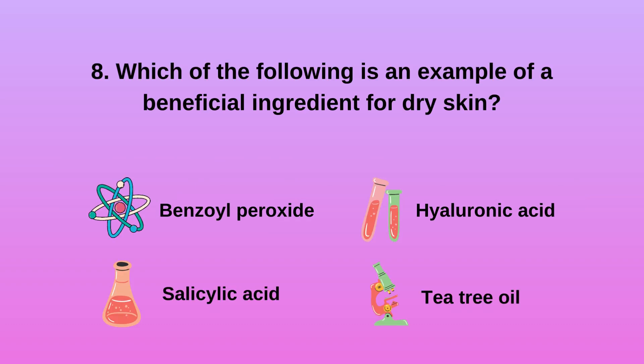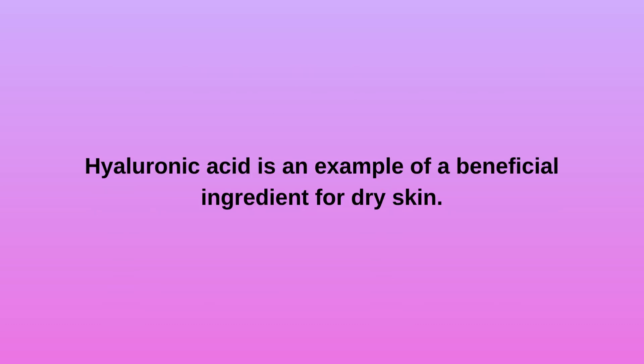8. Which of the following is an example of a beneficial ingredient for dry skin? A. Benzoyl peroxide. B. Salicylic acid. C. Hyaluronic acid. D. Tea tree oil. Hyaluronic acid is an example of a beneficial ingredient for dry skin.